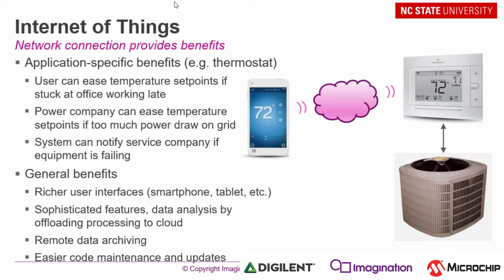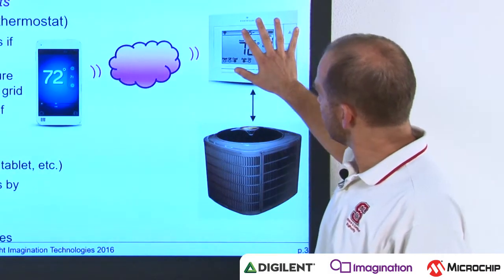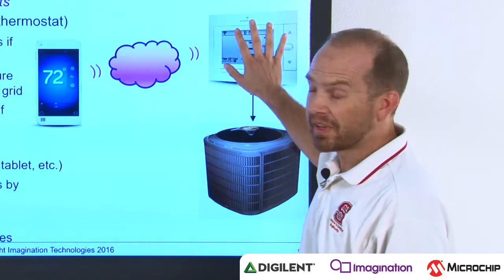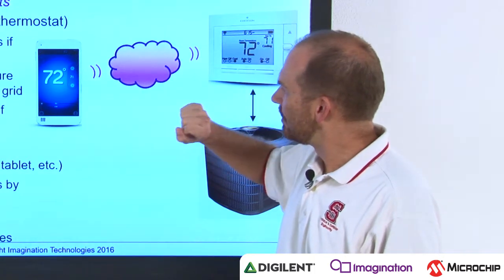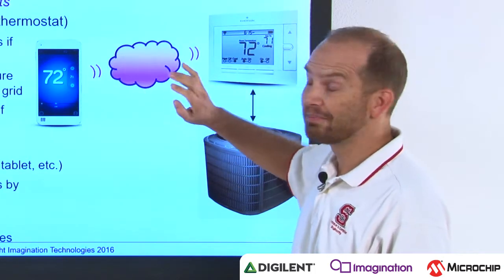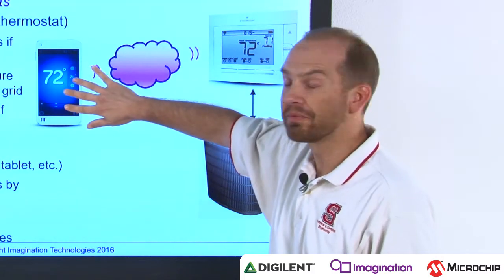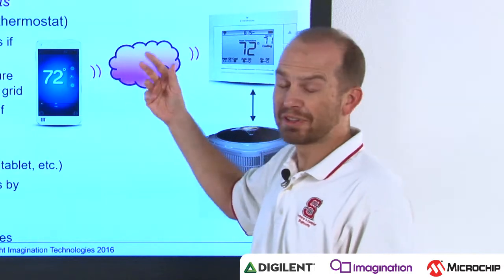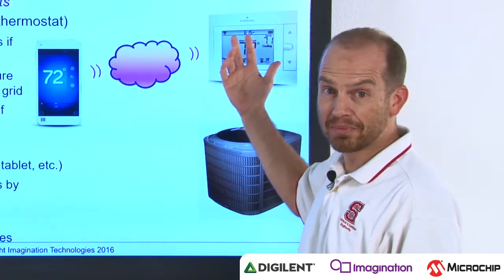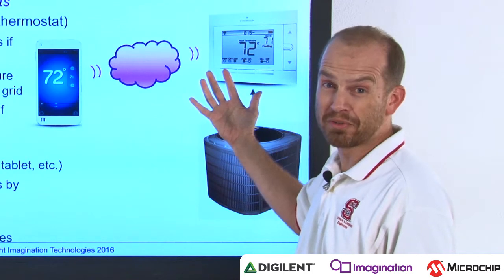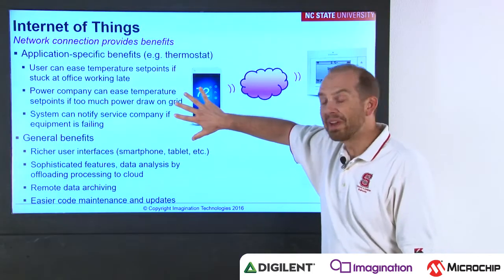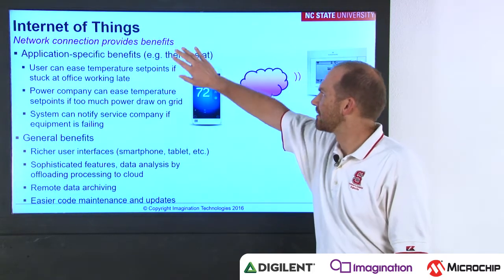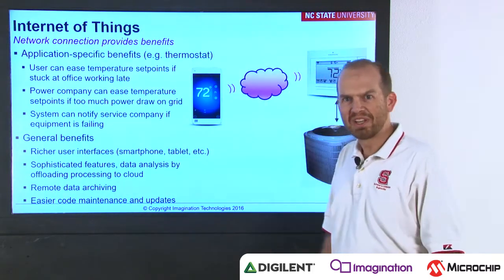In this course we also look at the Internet of Things. For example, a thermostat that controls your heat pump or air conditioner. If we connect that through the Internet to other devices we can get some nice benefits. Maybe we have a smartphone app to monitor and control the system, or the power company can control the thermostat if too much power is being drawn from the grid. There are quite a few benefits for connecting embedded systems to the Internet — this is what we have with the Internet of Things.